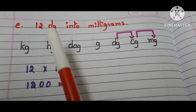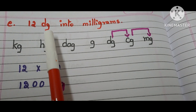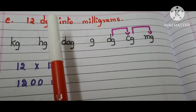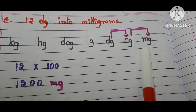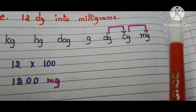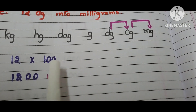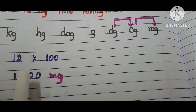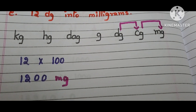Part (e): 12 decigrams into milligrams. The question is given in decigrams and we have to convert them into milligrams. Where are decigrams in the table? Here. And where are milligrams? Here. We move 2 steps to the right in the table, so we multiply by 100. 12 times 100 is 1200. The answer is 1200 milligrams.